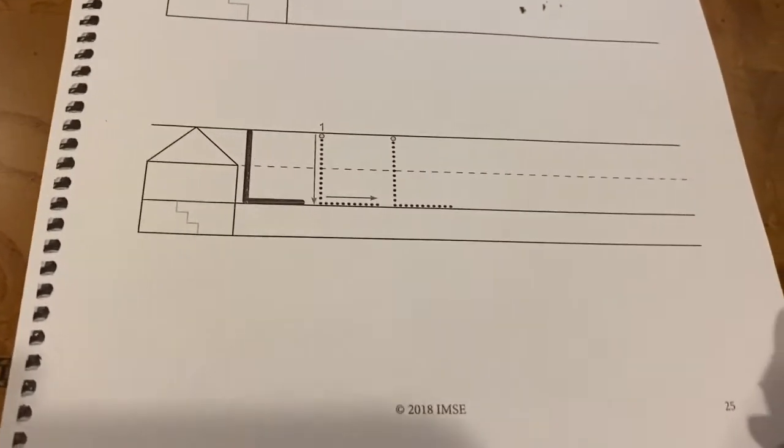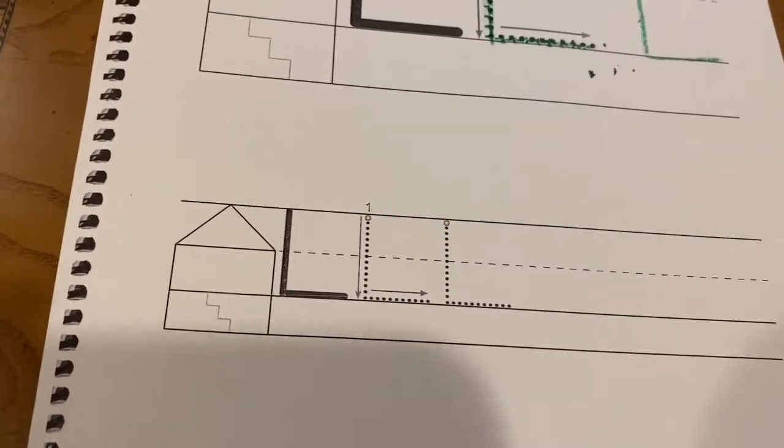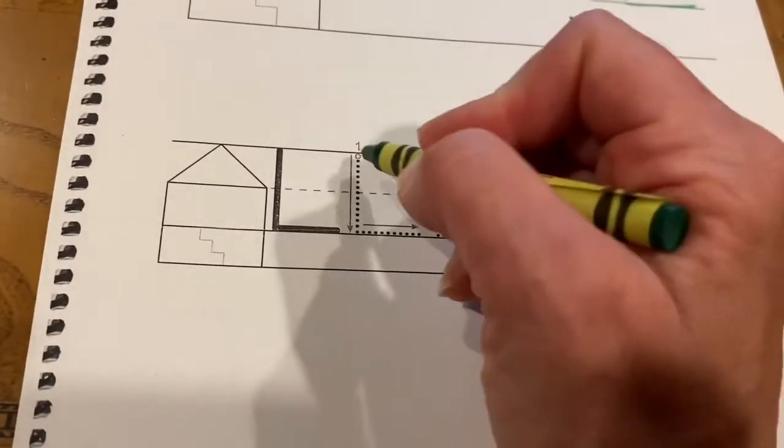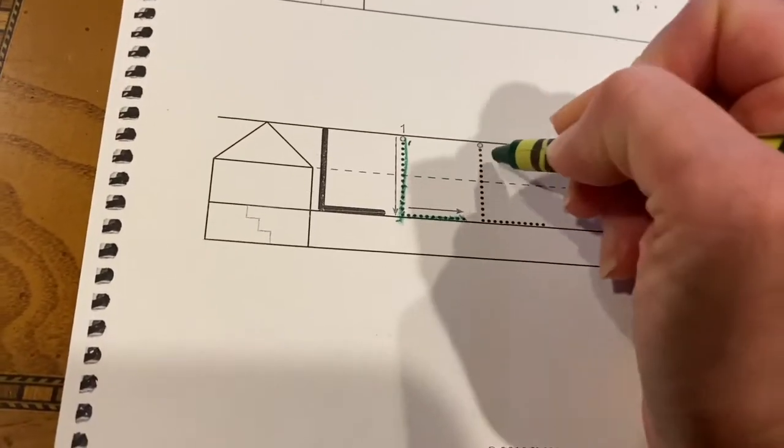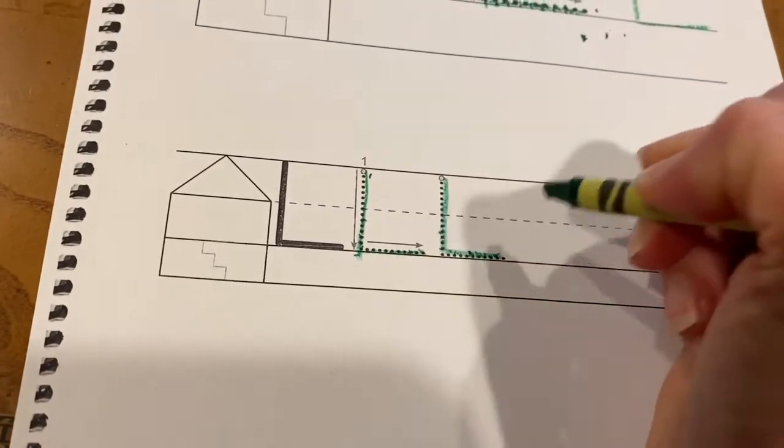Down at the bottom of page 25, you're going to trace again. You're going to trace and write across. Again, trace, line down, line across.